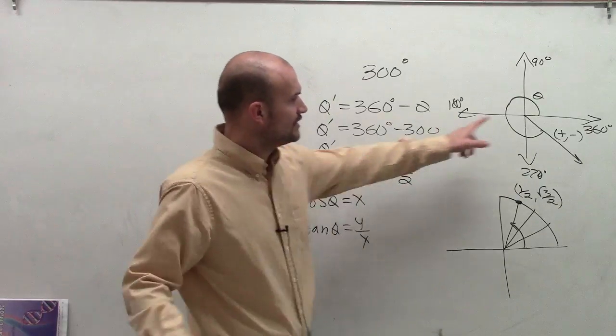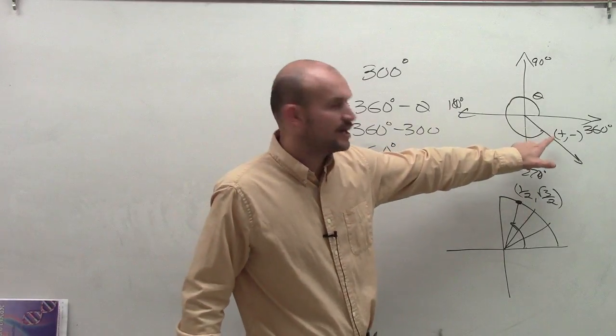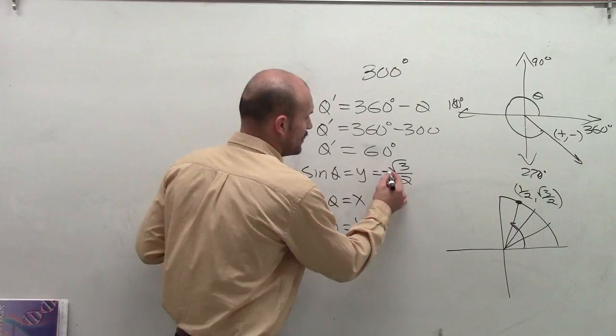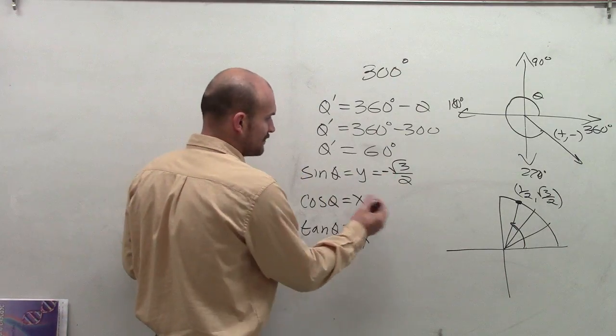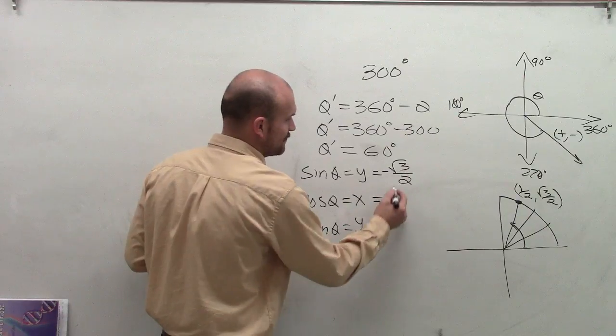But remember, we're dealing with the angle of 300 degrees, where y is negative. So therefore, this coordinate point will be negative. The cosine is going to be positive, which will be 1 half.